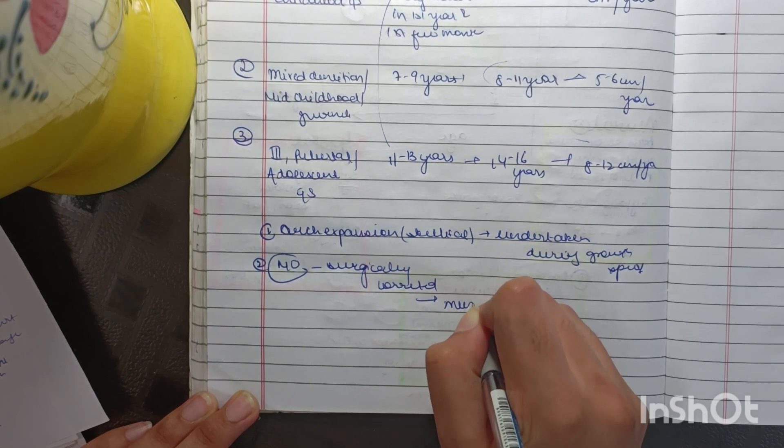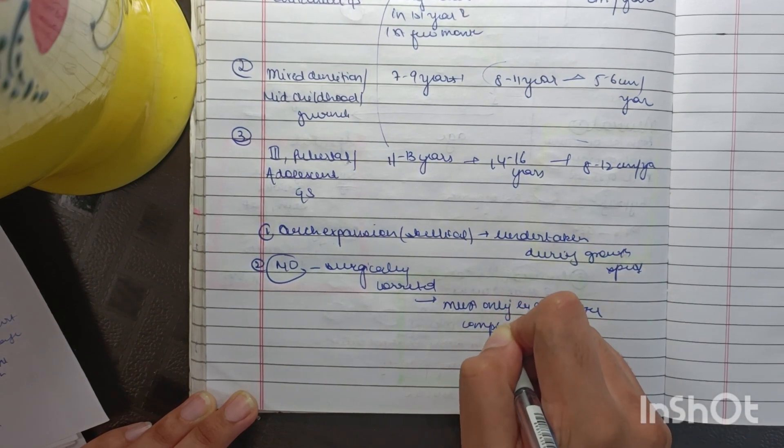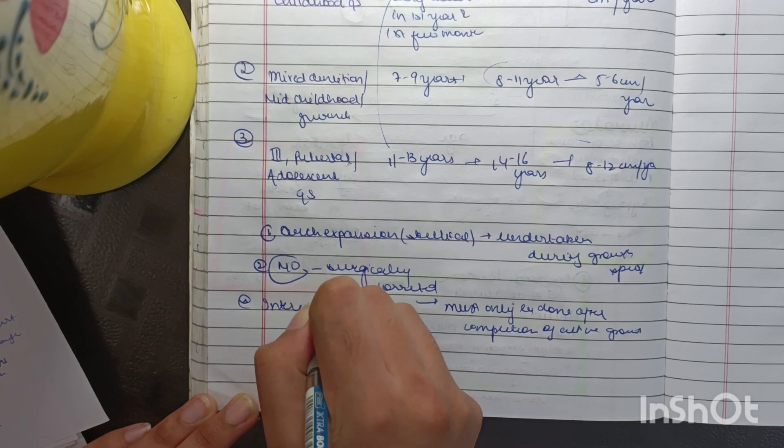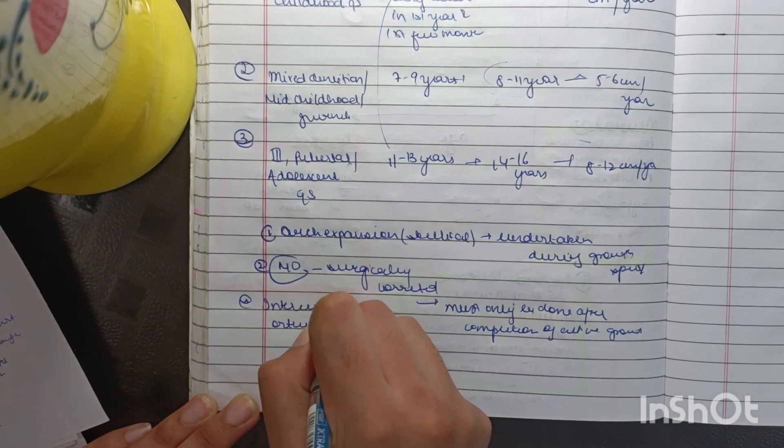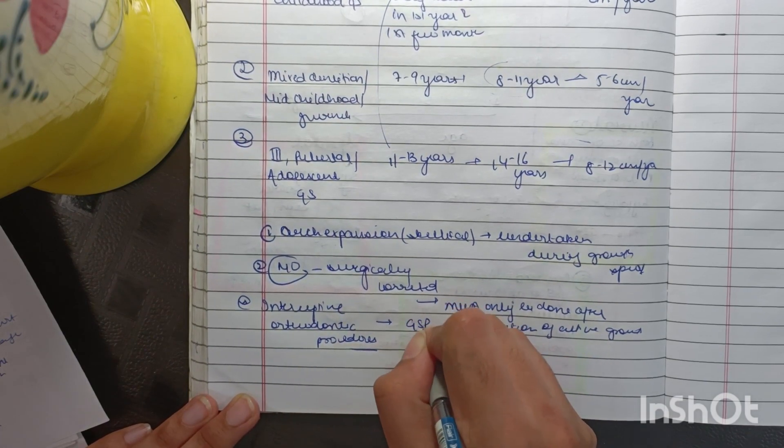Malocclusion which has to be surgically corrected must only be done after completion of active growth. Interceptive orthodontic procedures can be undertaken during growth spurts period.